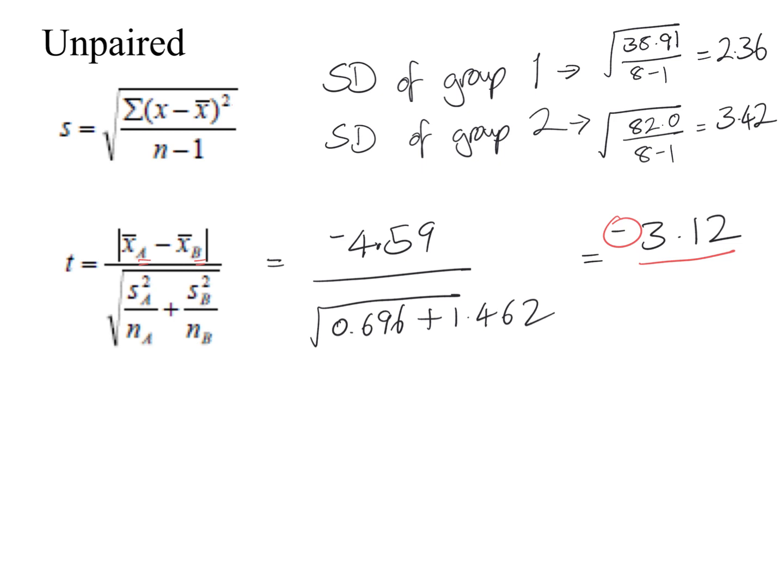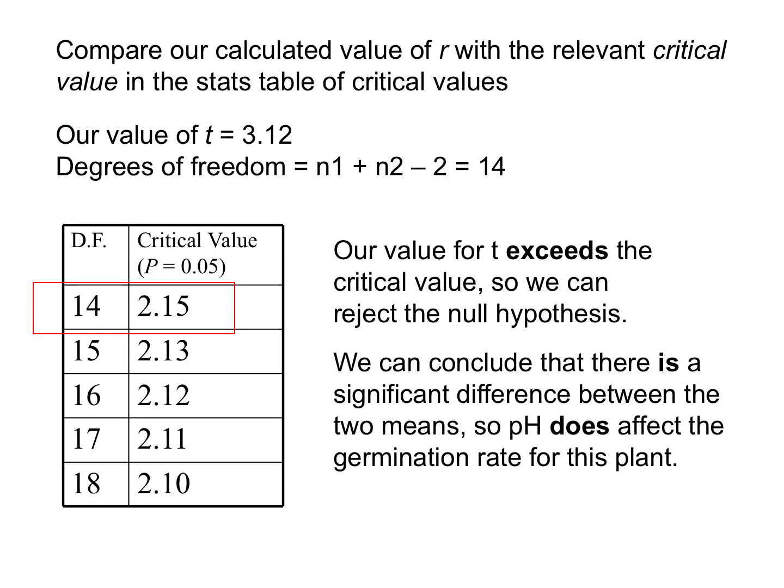To find the correct critical value, remember we need the degrees of freedom. There were 8 pots in group 1 and 8 in group 2, giving 16 total sets of data. Because the data is unpaired, degrees of freedom = 16 minus 2 = 14. If our t-test answer is lower than the critical value, we accept the null hypothesis — there is no significant difference between germination rates at the two pHs.